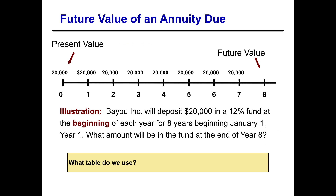Let's look at an example. We have Bayou Incorporated — they're going to deposit $20,000 in a 12% fund at the beginning of each year for eight years, beginning January the first of year one. What amount will be in the fund at the end of year eight?